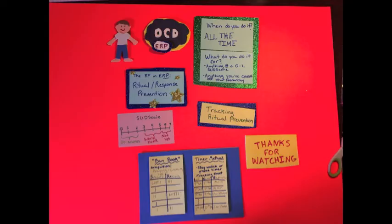In summary, ritual prevention is really important. You should be doing it all the time for anything that causes a 0 to 2 level of distress, or is something you've crossed off your hierarchy. And you can track rituals using either a ban book or using a timer.